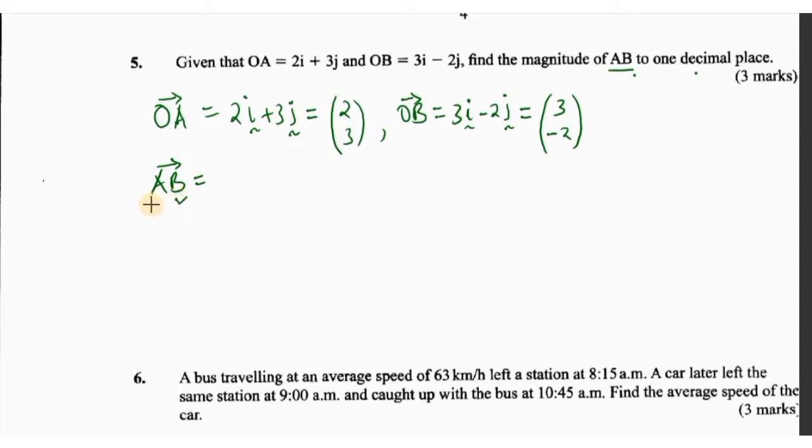If we use the column vectors, we'll have OB as (3, -2) minus OA which is (2, 3).